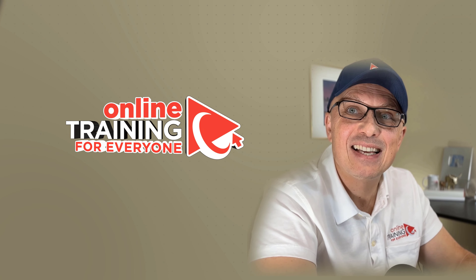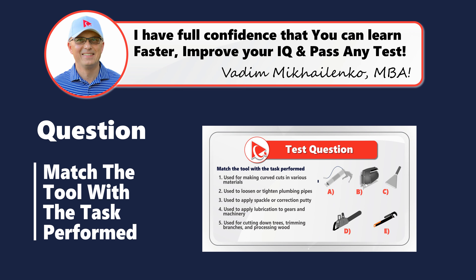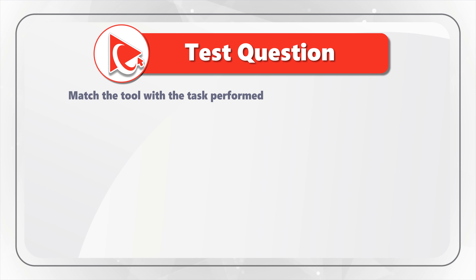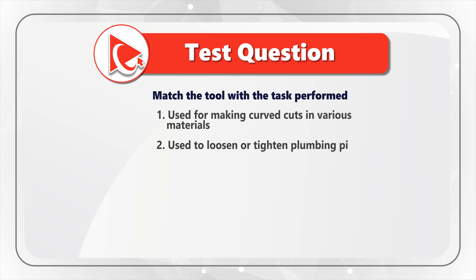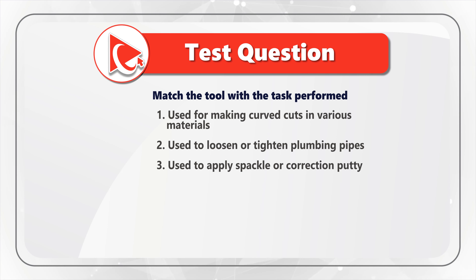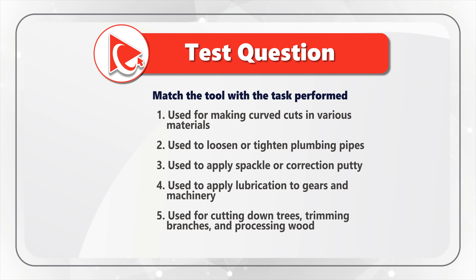Now let's get started. You are presented with five tools and need to match each tool with the task performed. Choice one: used for making curved cuts in various materials. Choice two: used to loosen or tighten plumbing pipes. Choice three: used to apply spackle or correction putty. Choice four: used to apply lubrication to gears and machinery. Choice five: used for cutting down trees, trimming branches, and processing wood.